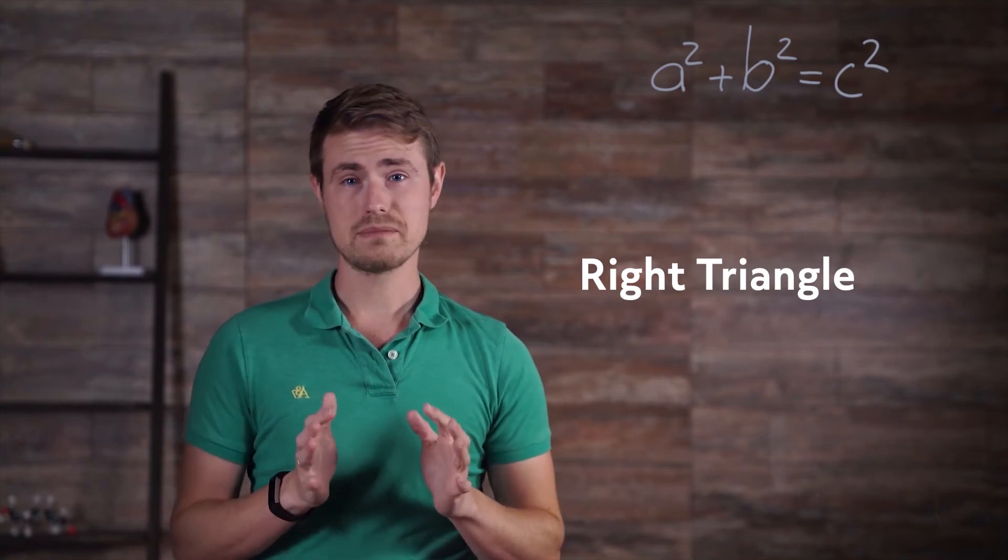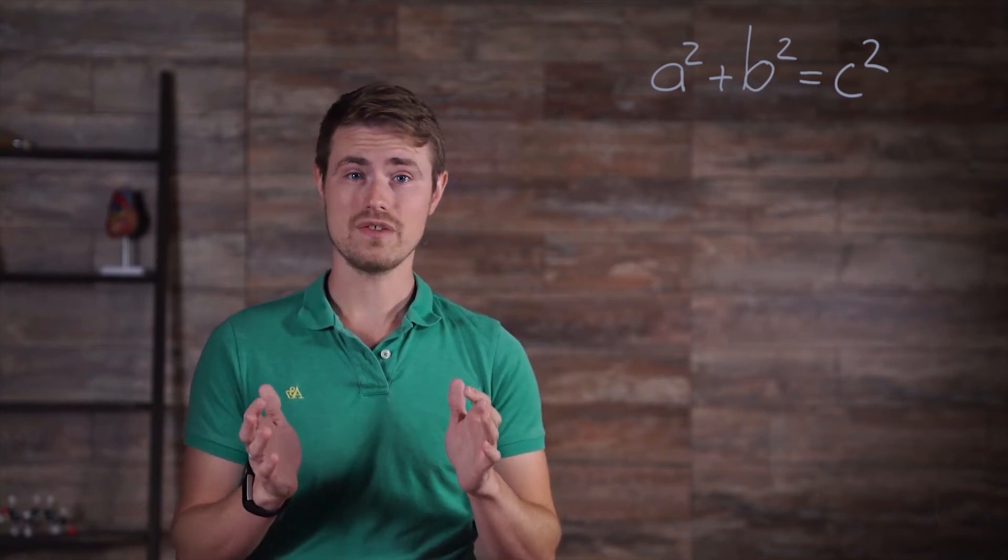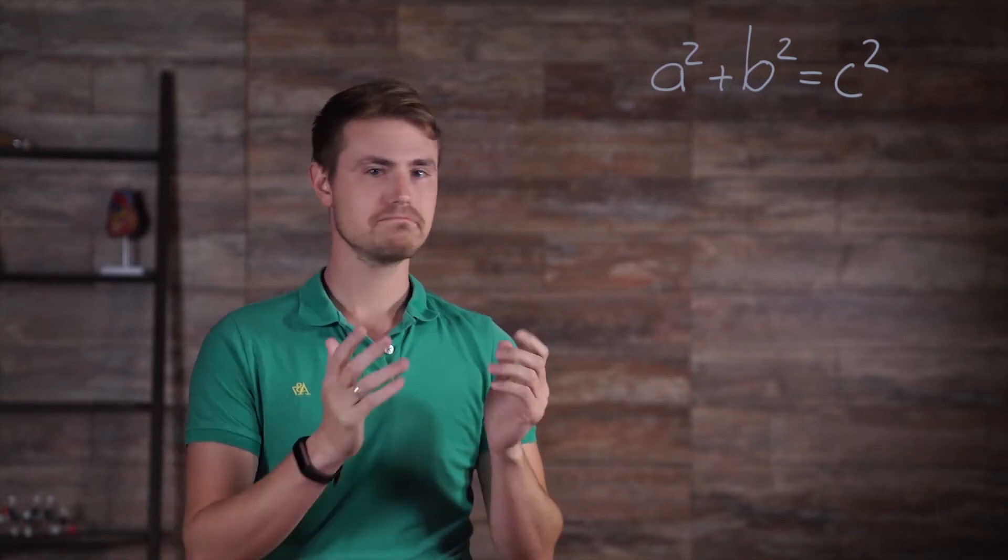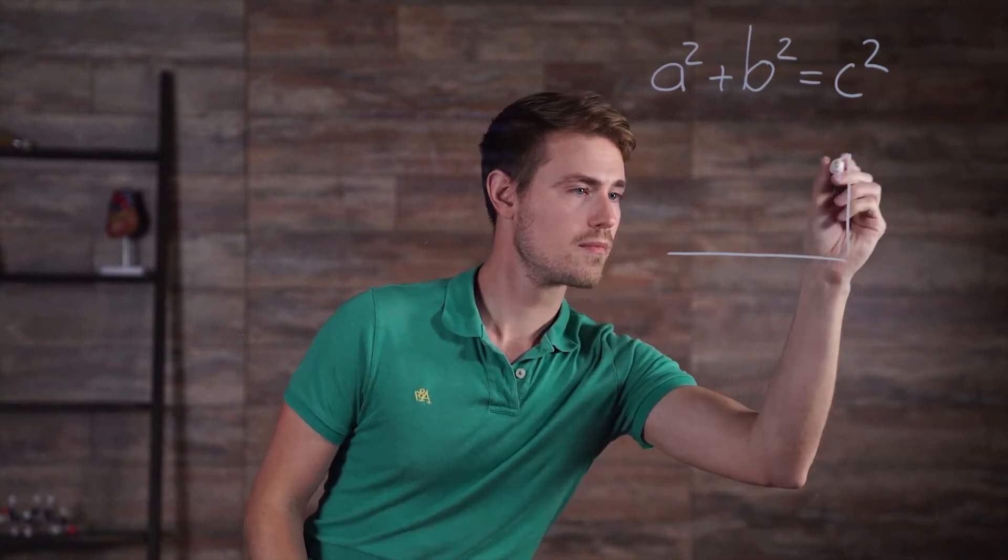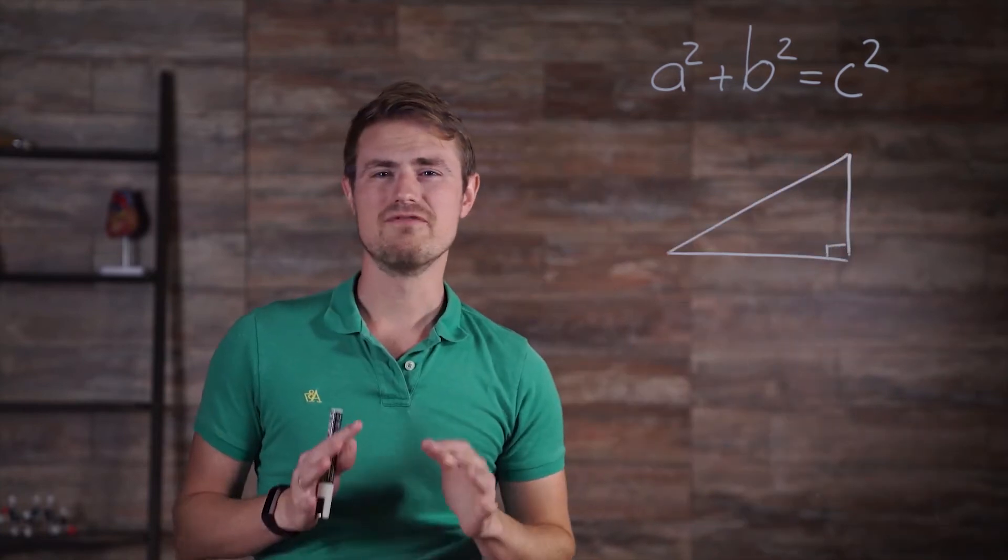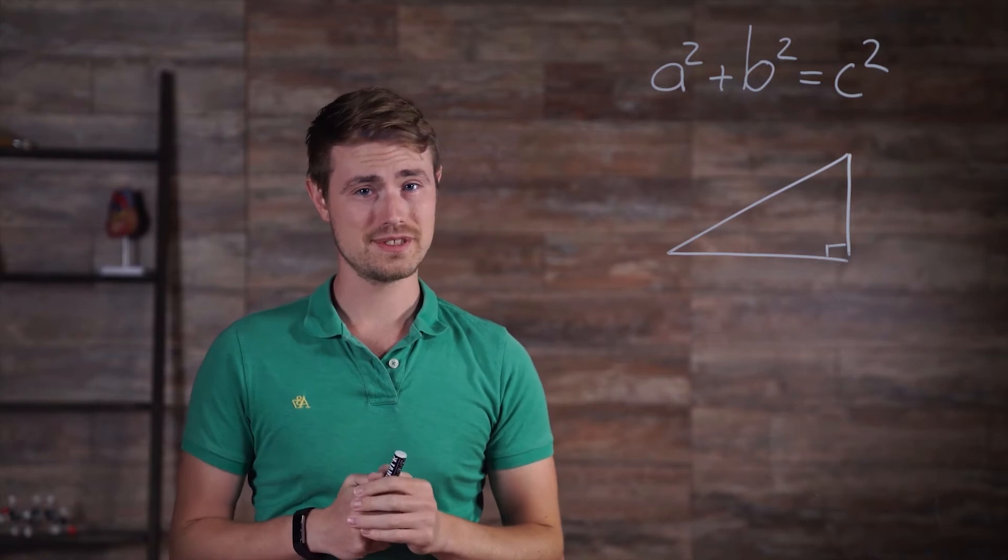The triangle has to be a right triangle, which means that it has an angle that measures exactly 90 degrees, like this one. The theorem is very easy to remember and just as easy to use.